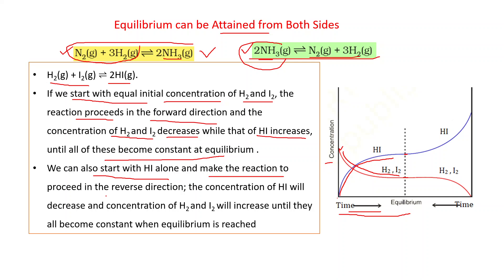We can also start with HI alone and make the reaction proceed in the reverse direction. The concentration of HI decreases and the concentrations of H₂ and I₂ increase until they all become constant when equilibrium is reached. In the diagram, starting from HI, its concentration is initially maximum and decreases with time, while H₂ and I₂ concentrations start minimum and increase, until concentration becomes constant — the state of equilibrium has been reached from both sides.